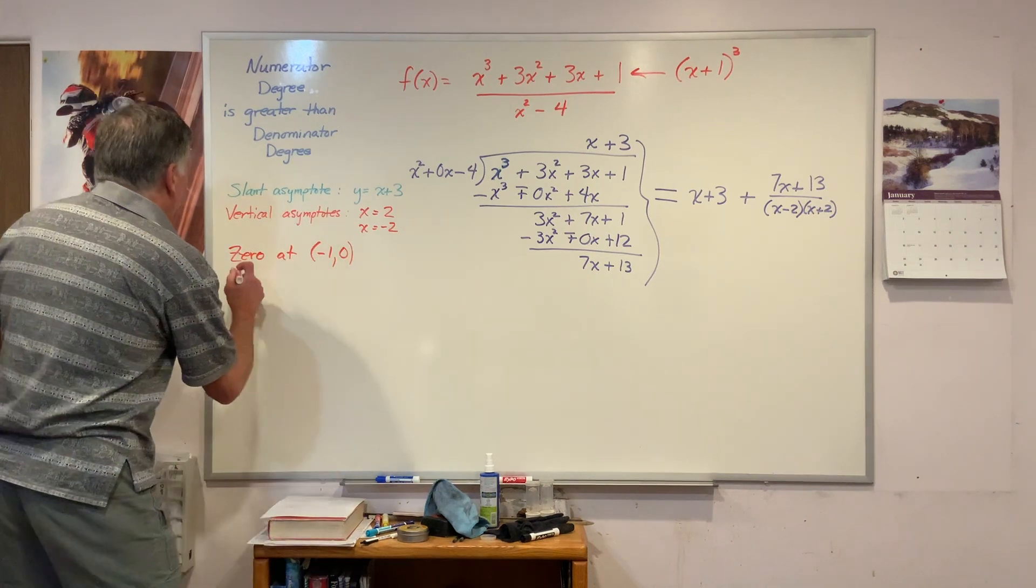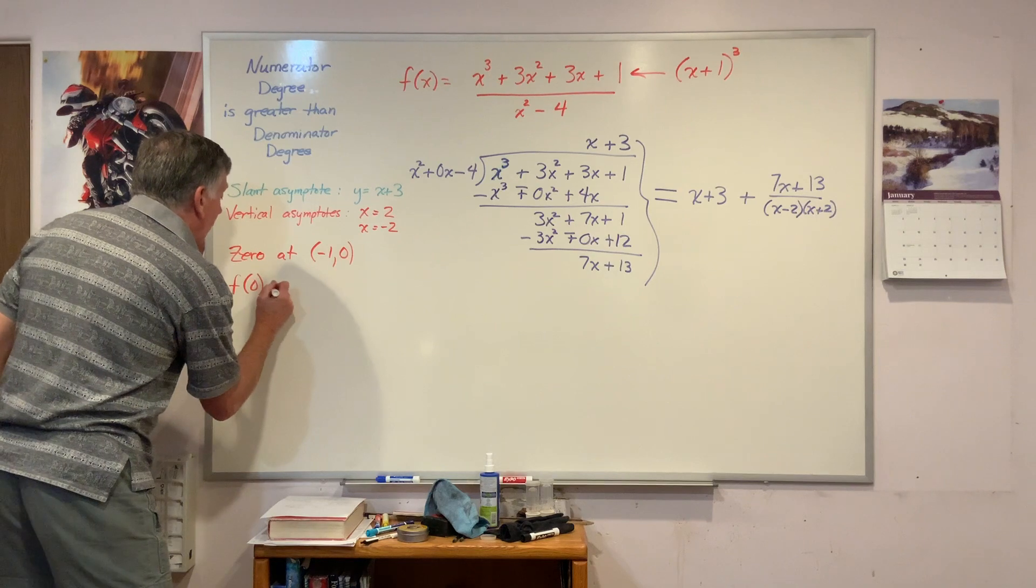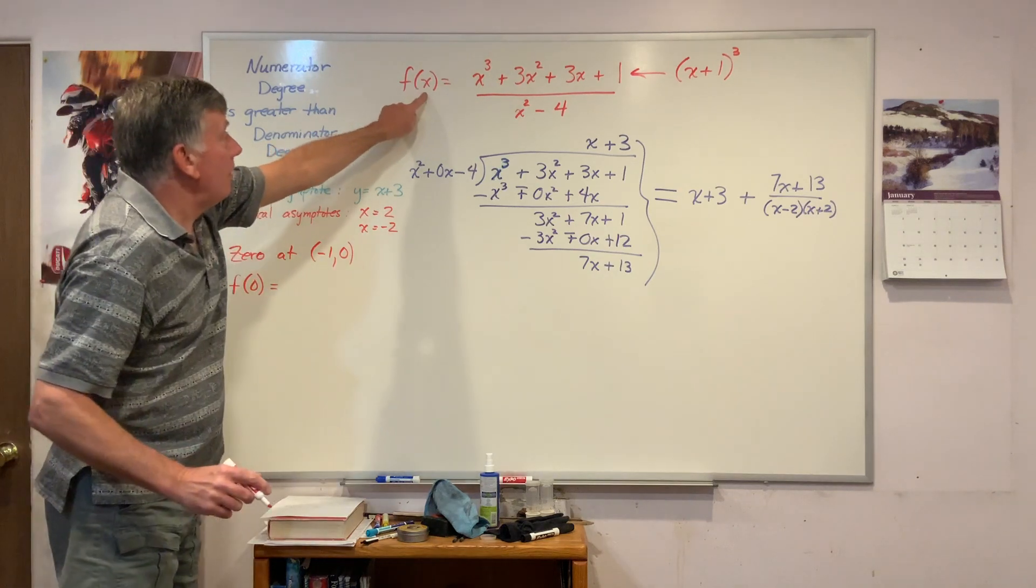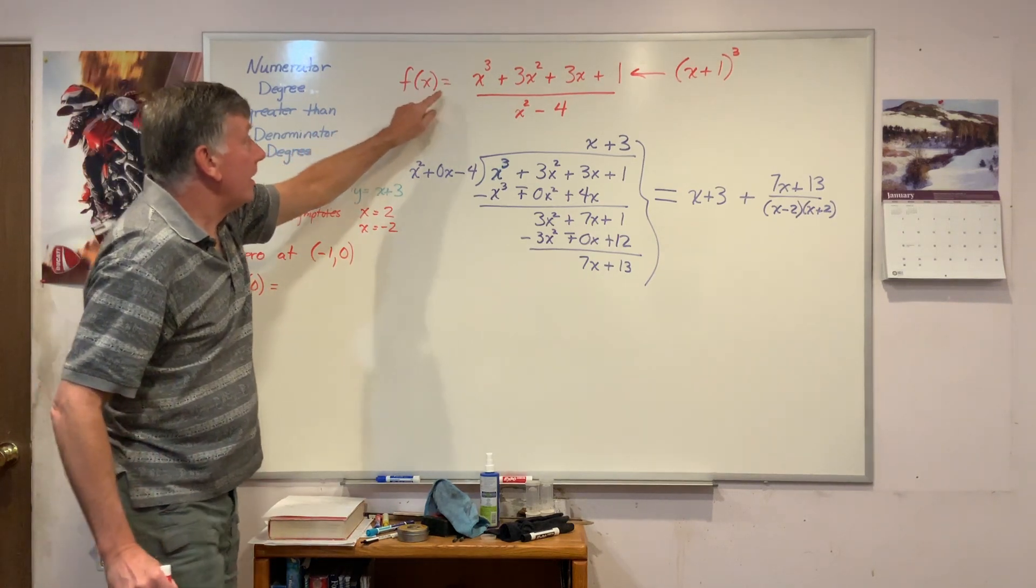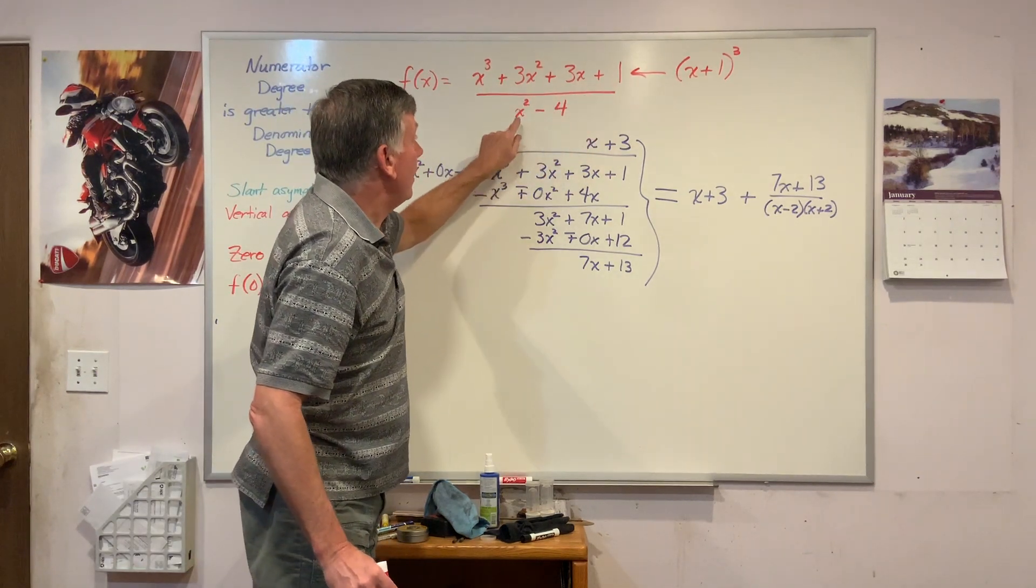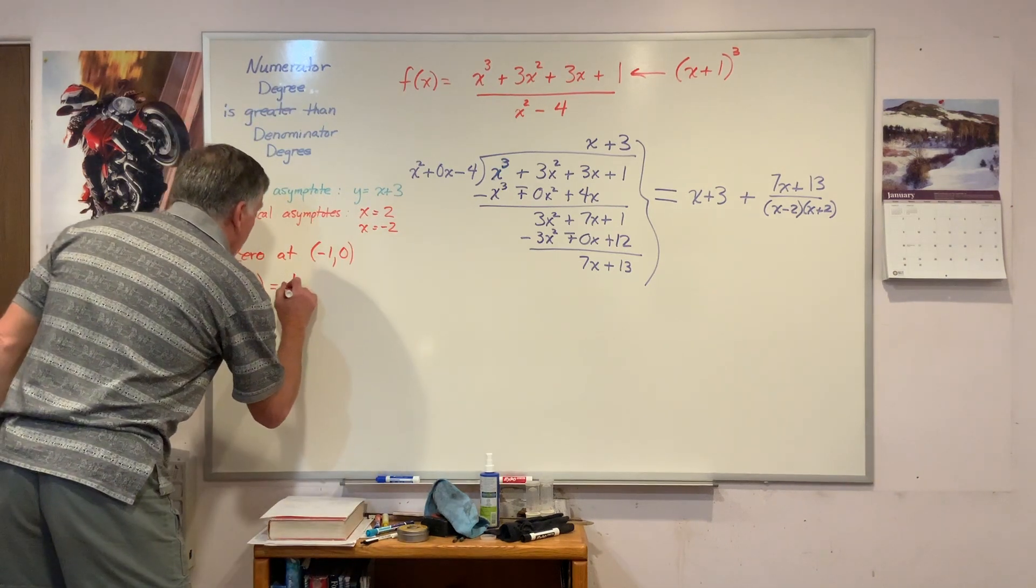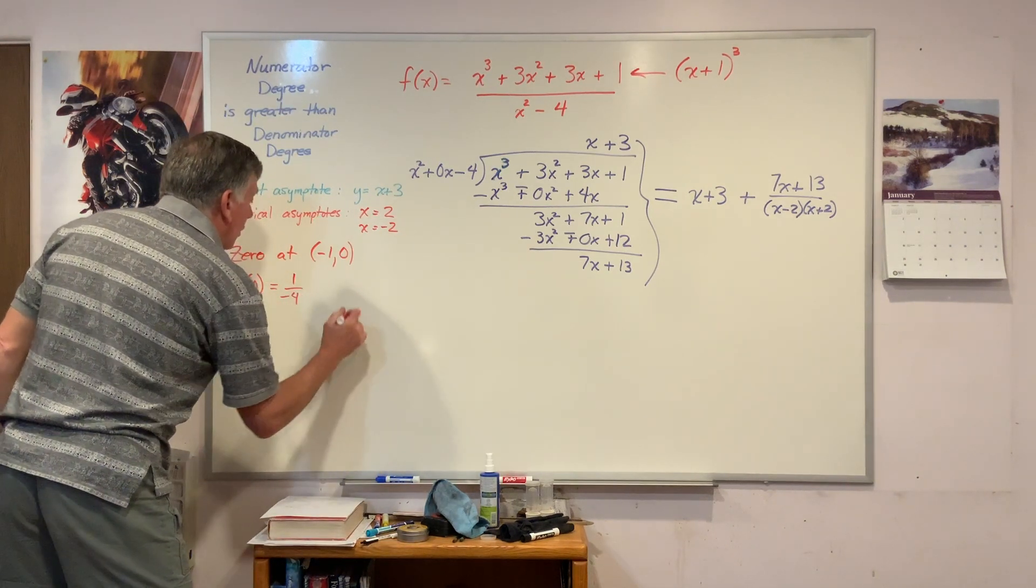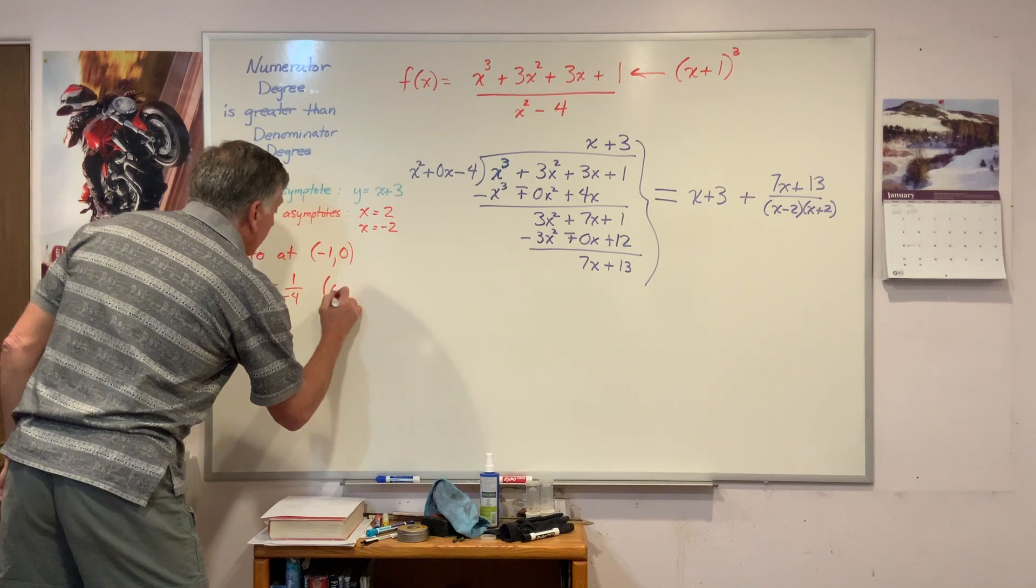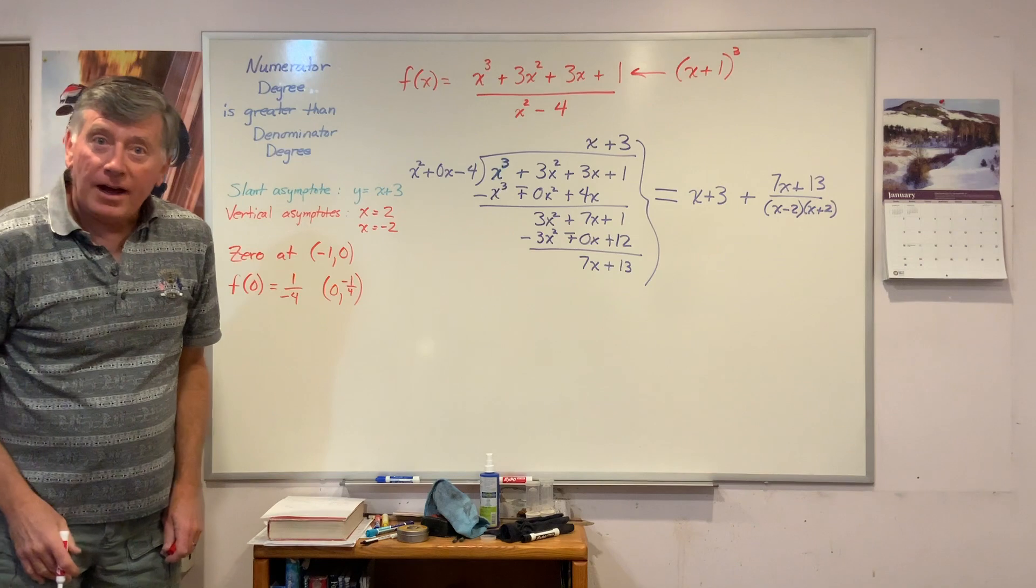Finally, another point that I can plot if I want is f of 0. I ask myself, if I put 0 in for x, I get 0, 0, 0, 1 divided by 0 minus 4. 1 over negative 4. Or my point is going to be 0, minus 1/4.